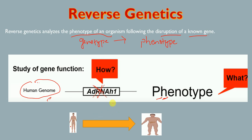When ADRNAH1 was deleted, the offspring of these individuals were obese or fat. So what is the function of this gene? When this gene was deleted from the human genome, it resulted in obesity. This means the gene might be involved in metabolism, because faster metabolism leads to leaner individuals while slower metabolism leads to obesity.